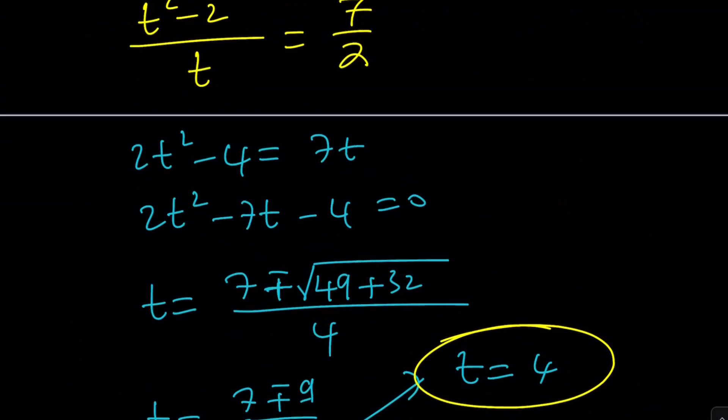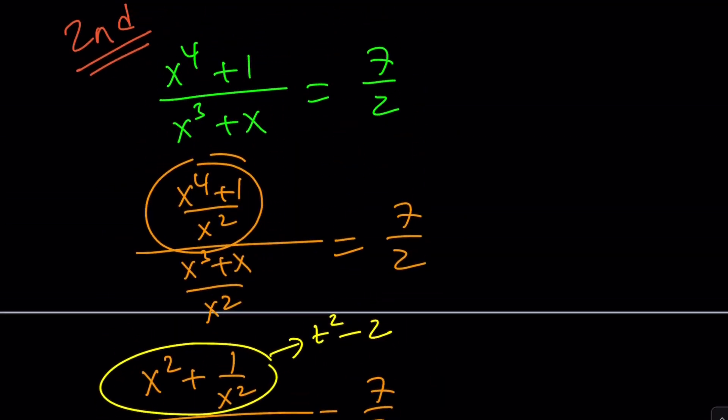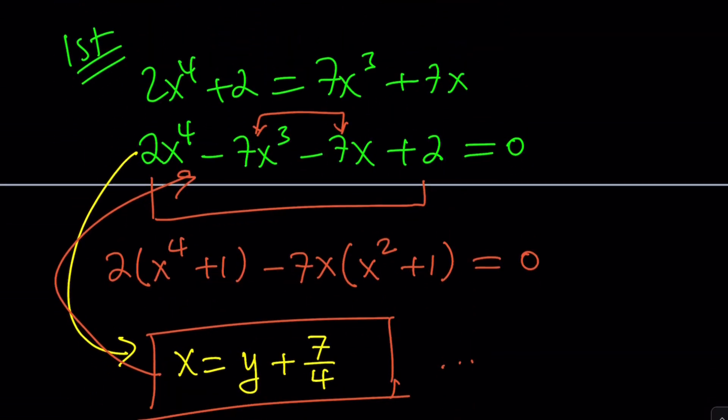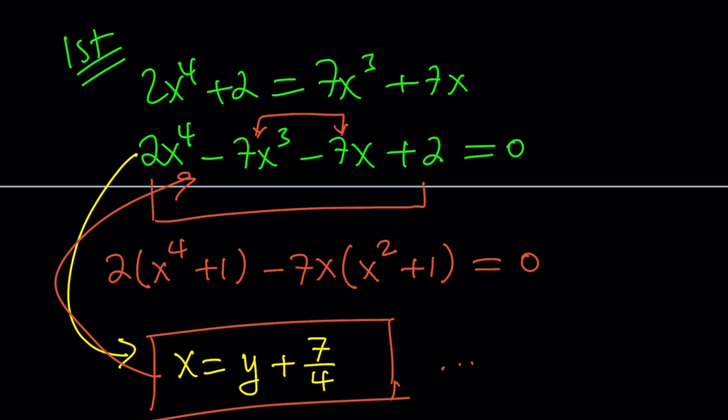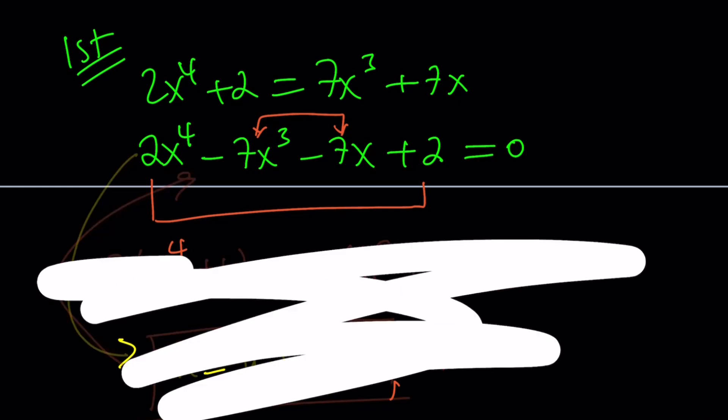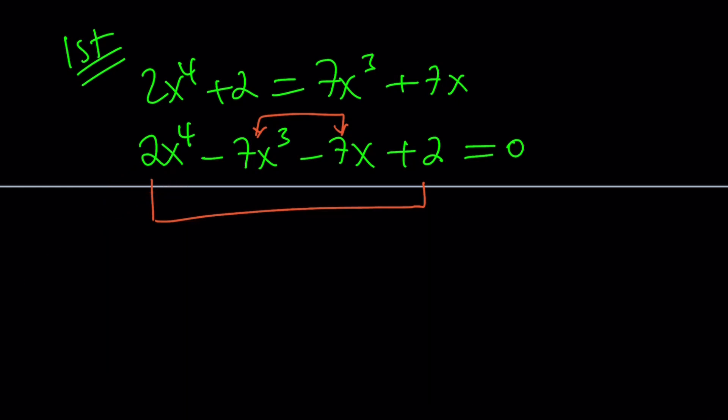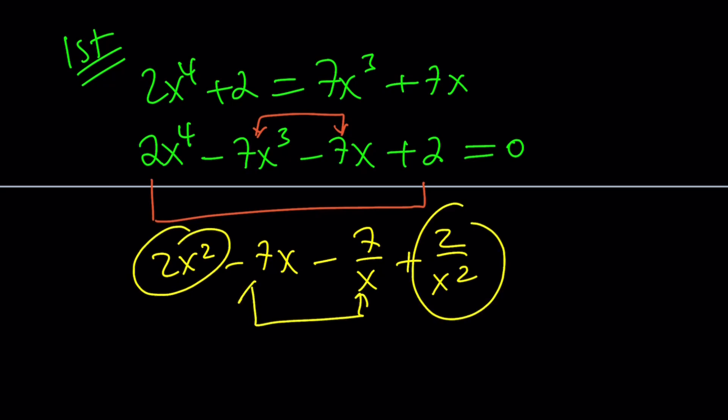But let me go back and show you real quick how we could also do this within the first method, because that's also somewhat straightforward. So here's what you could do from this point on. You could go ahead and divide everything by x squared. It's going to give you 2x squared minus 7x minus 7 over x, x plus 2 over x squared. And then put these two together and put these two together. Factor out the 2's and the 7's, and then just substitute and solve. And that's pretty much it.